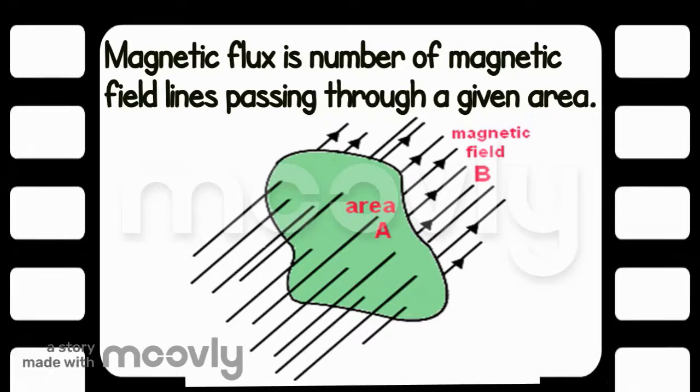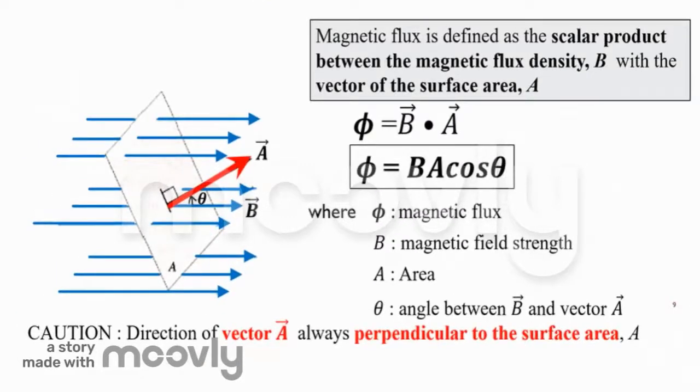To calculate magnetic flux, it's the scalar product between magnetic flux density B with the vector of surface area A. The magnetic flux phi is equal to B dot A, or phi equals BA cos theta, where theta is the angle between B and vector A. Take note that the direction of vector A is always perpendicular to the surface area.